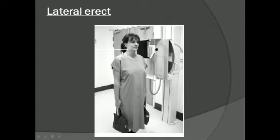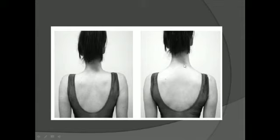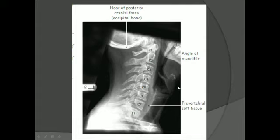This is the difference between weight-bearing and non-weight-bearing. In the non-weight-bearing image, the shoulders are straight and will be superimposed with the thoracocervical junction. When you give some weight to the patient, the shoulders get depressed and the thoracocervical junction becomes clear.